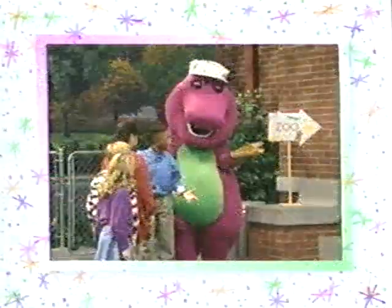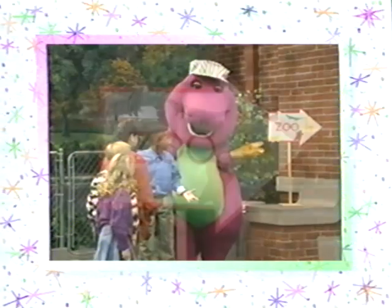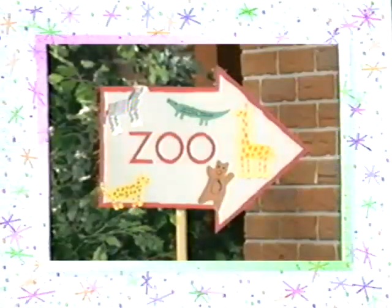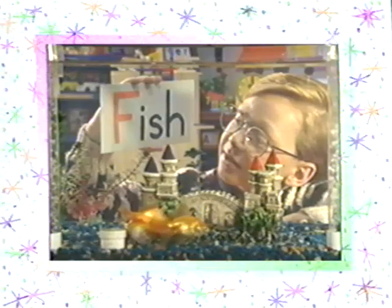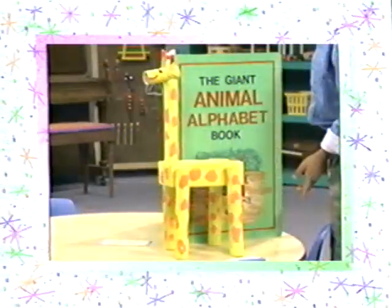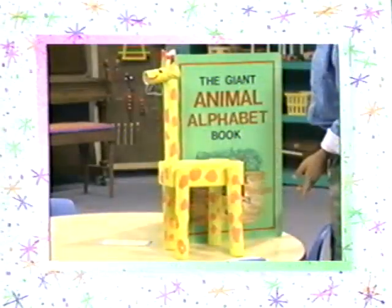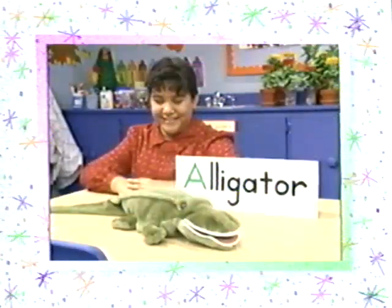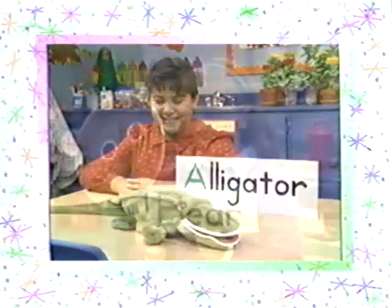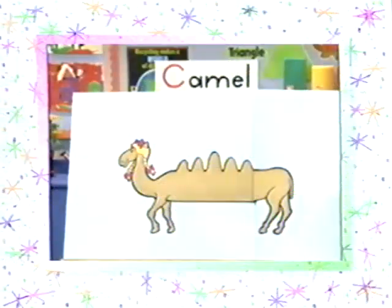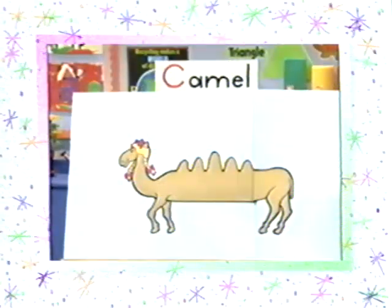Did you have as much fun as I did visiting our alphabet zoo? You can use all the letters of the alphabet to make your own zoo with your friends. A is for alligator. B is for bear. And C is for camel.